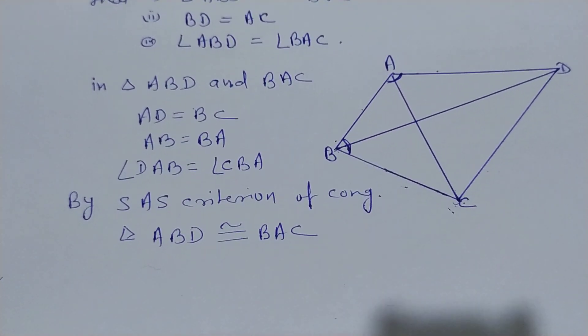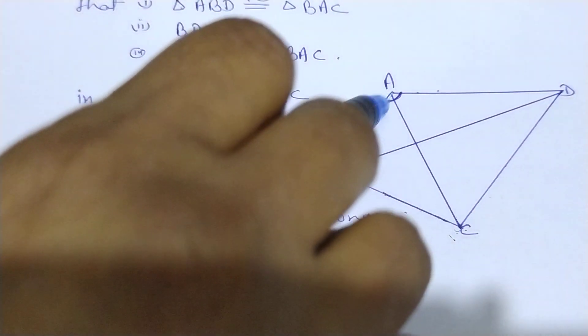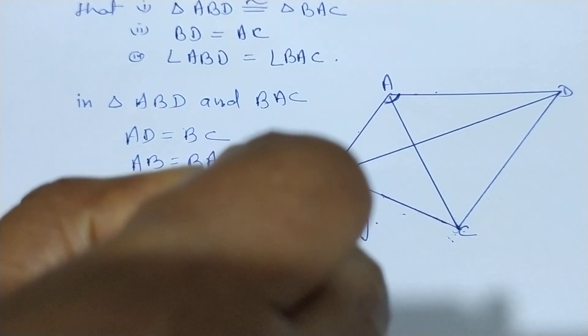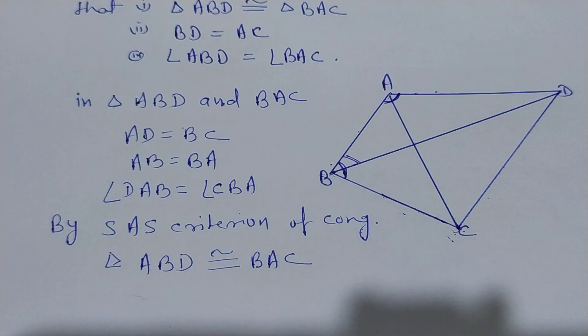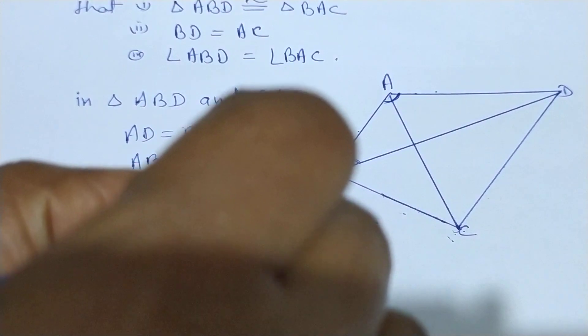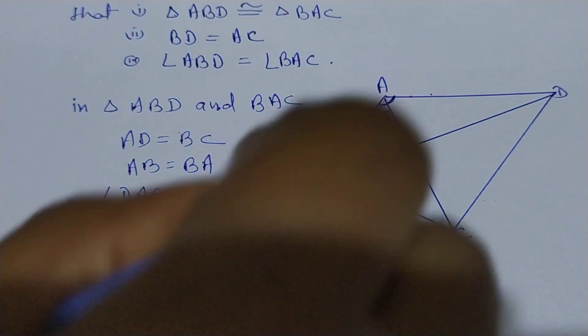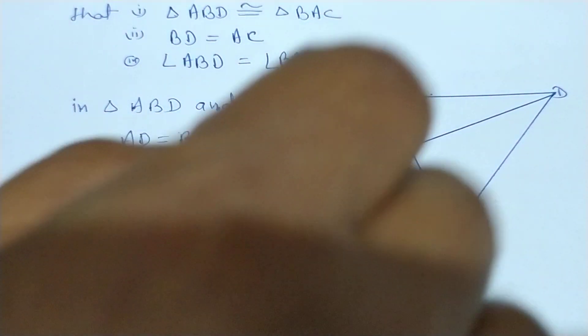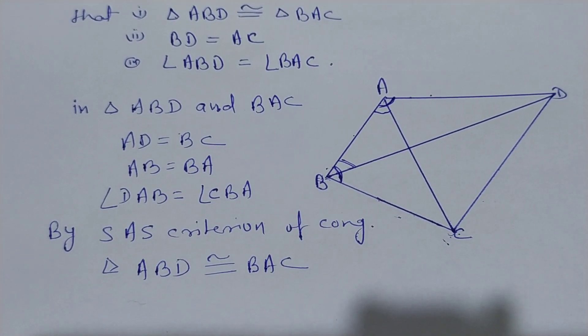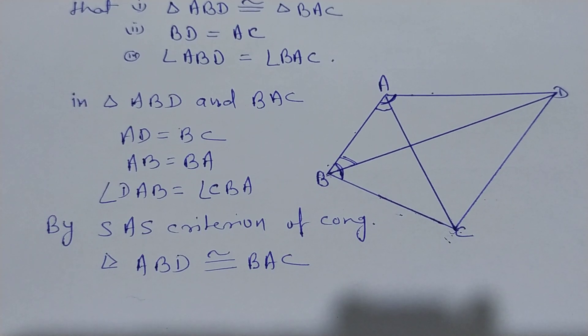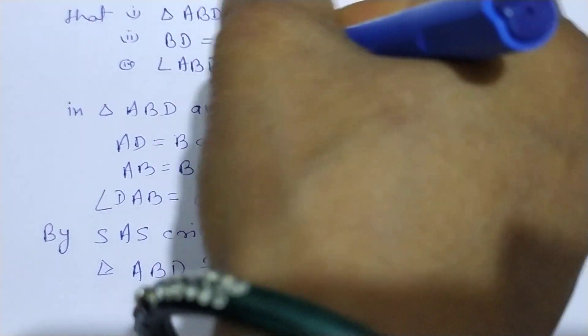The second proof is done, BD equal to AC. And third one is angle ABD, this angle, equal to angle BAC, this angle. Again the same thing. Since triangle ABC and ABD both triangles are congruent, that's why angle ABD is equal to angle BAC. Both of these are also automatically proved.